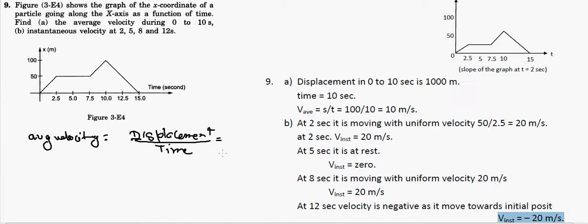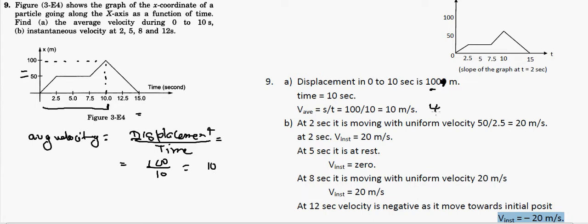This is a distance versus time graph. At time equal to 10 seconds, the distance is 100 meters. So the average velocity is 100 divided by 10, which gives 10 meters per second. That's the first answer.